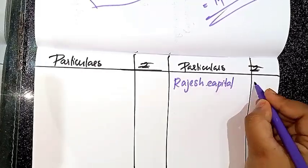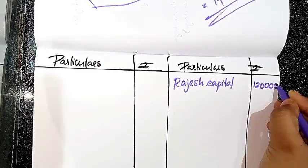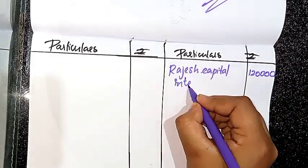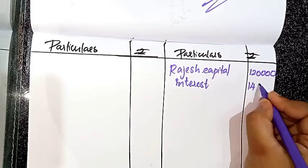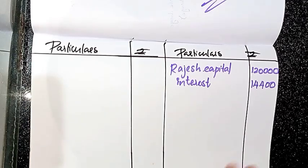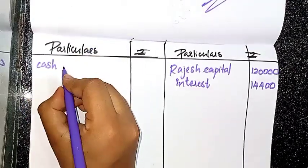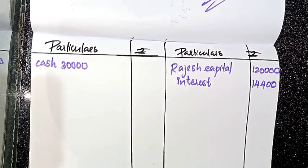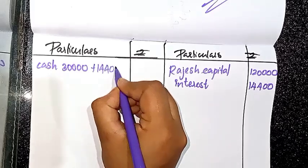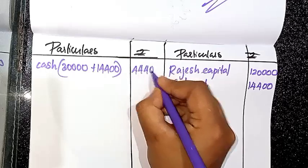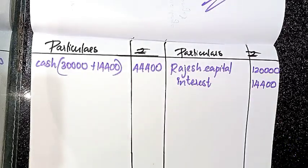Rajesh's capital account trustee balance is ₹1,20,000. We have to use this amount and apply interest. On the credit side, we will enter the cash payment. The cash is ₹30,000. ₹30,000 divided by 4 gives us each installment. ₹30,000 plus interest — we calculate the balance.